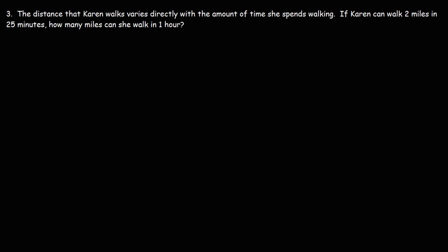Number three, the distance that Karen walks varies directly with the amount of time she spends walking. If Karen can walk two miles in 25 minutes, how many miles can she walk in one hour? What we know is that the number of miles that she walks varies directly with the time she spends walking. So let's say Y corresponds to the mileage and X corresponds to the time in minutes.